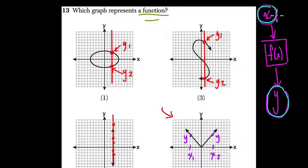because in a function, you can have multiple x values all leading to the same y value, but you can't have the reverse. You can't have one x value leading to many different y values. That's how we define a function. And in this case, this graph is the only function here.